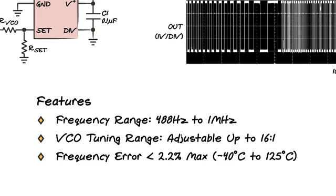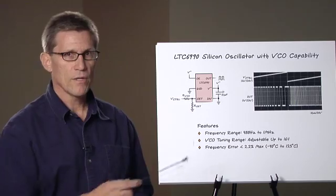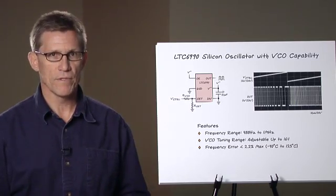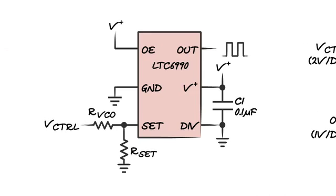It has a maximum frequency error of only 2.2% over the entire operating temperature range. Now with this set pin here, derived from an on-chip precision bandgap reference, the addition of a single resistor allows you to control the frequency by a simple voltage. In other words, create a VCO.